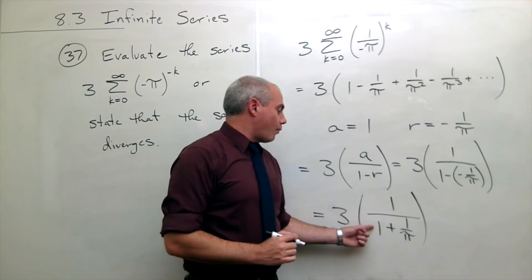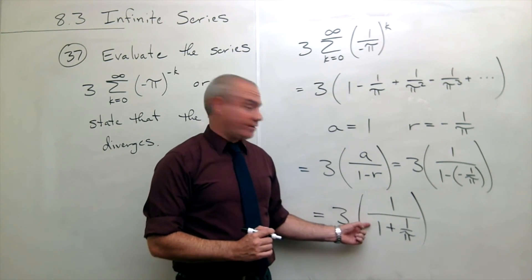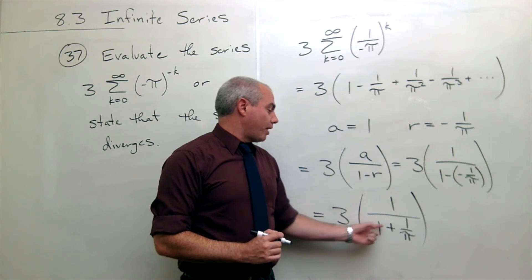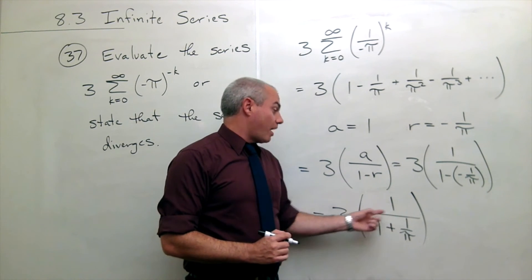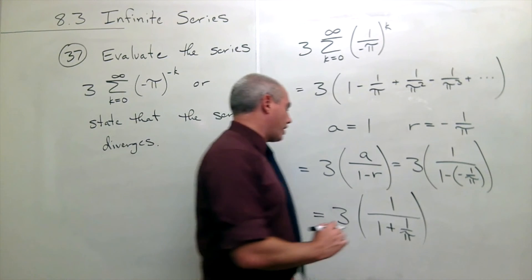So this is equal to 3 times 1 over 1 plus 1 over π. One plus 1 over π, 1 is π over π. So π over π plus 1 over π is π plus 1 over π. So let's write it that way.